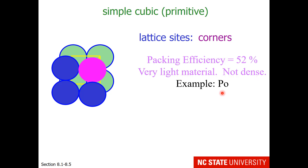One of the elements that has this type of unit cell is polonium. I need to introduce a term called coordination number — this is the number of atoms in the near vicinity of an atom. The coordination number for a simple cubic cell is 6.